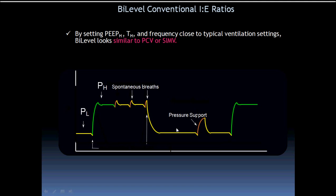If the patient is not taking inspirations and becomes paralyzed, this will be considered a mandatory mode of ventilation. The high time is usually about one second and the expiratory time is three seconds — one plus three — so the rate would be about 15 breaths per minute. The tidal volume is determined by the driving pressure, which is the difference between the high and low pressures, in addition to patient resistance.